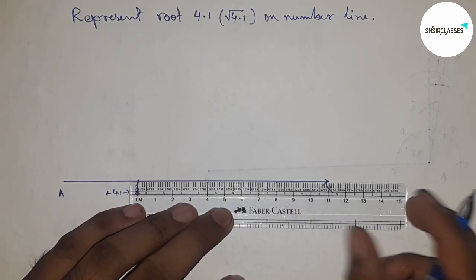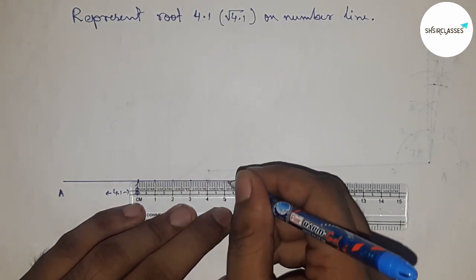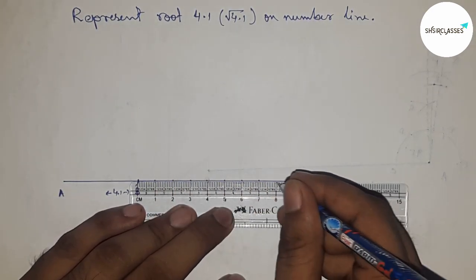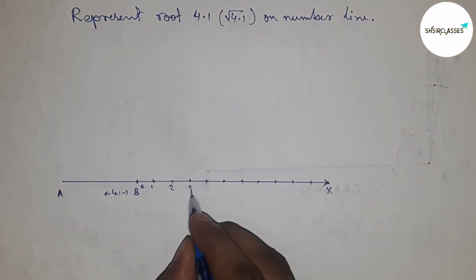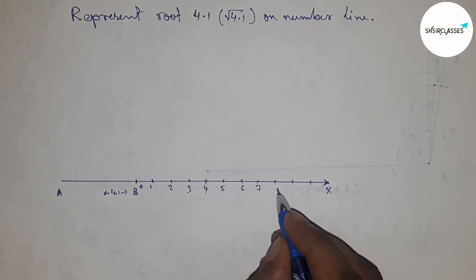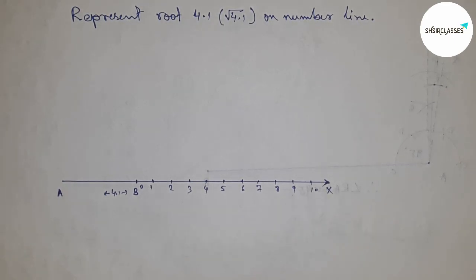Mark numbers from B to X using the scale: 1, 2, 3, and so on. Mark all the numbers on the line this way. This is point C.